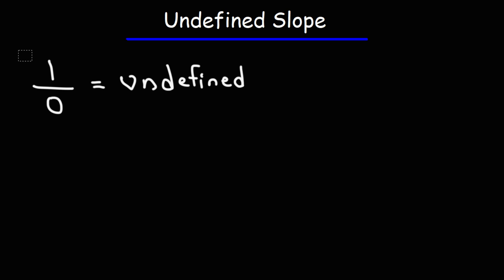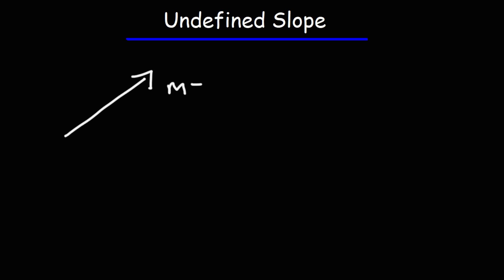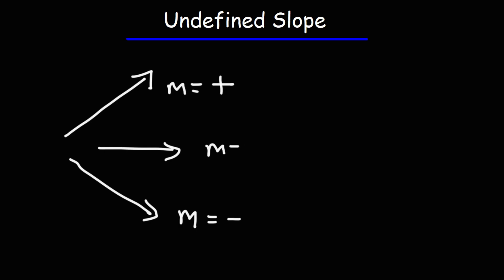So anytime you have a zero in the bottom of the fraction, you have an undefined value. Now there are different types of slopes that we can have for a linear equation: we could have a positive slope where the line is going up, when the line is going down we have a negative slope, and for horizontal lines the slope is zero, but for vertical lines we have an undefined slope — you can think of it as one over zero.